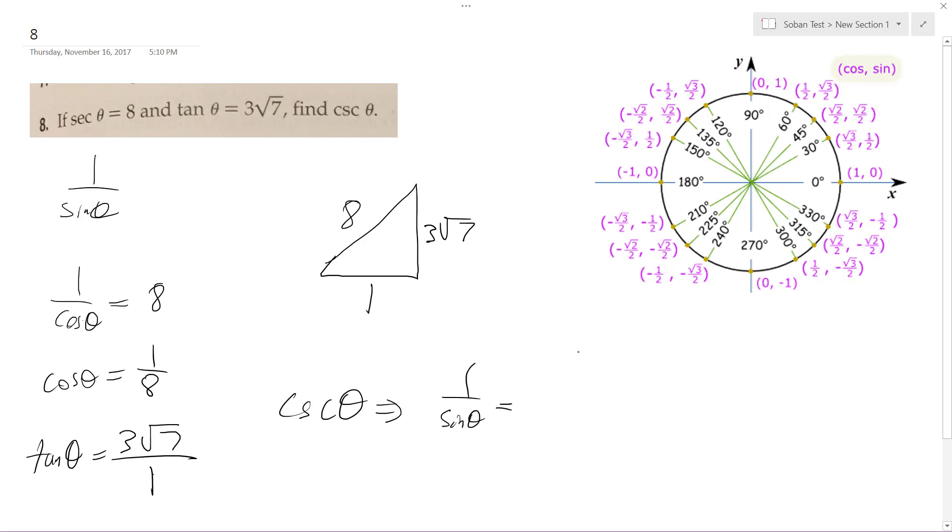So this is going to be equal to 1 over 3 root 7 over 8, and then it gets reciprocated to get the cosecant.